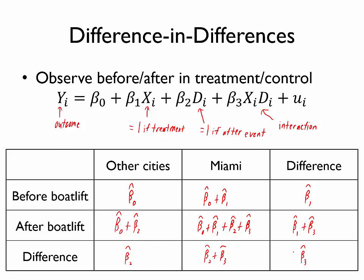Think of β̂₂ as measuring the impact of other economic changes going on at that same time. Well, by measuring this difference-in-differences, β̂₃, we're essentially looking in Miami and asking what happened to wages after the boat lift in Miami afterwards versus before, but then we're subtracting off this β̂₂, which tells us how wages change in other cities.